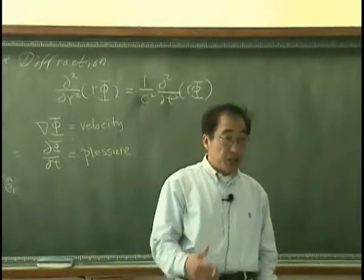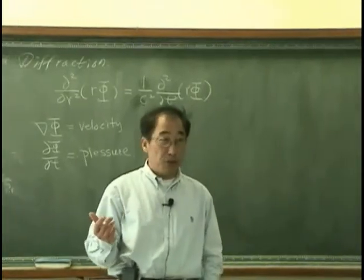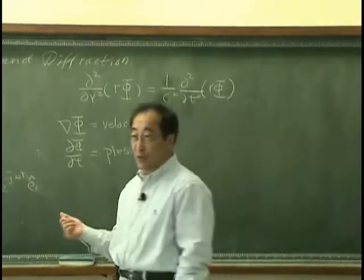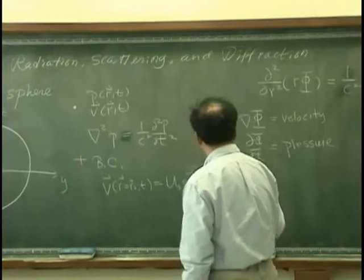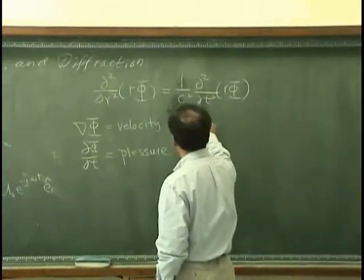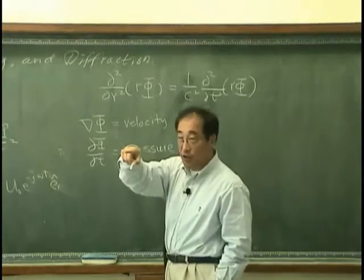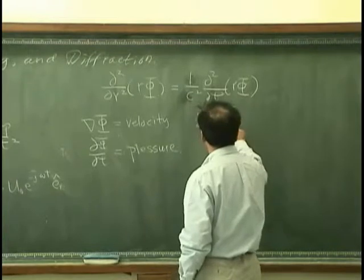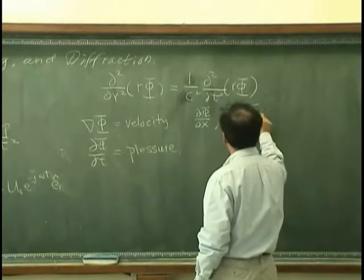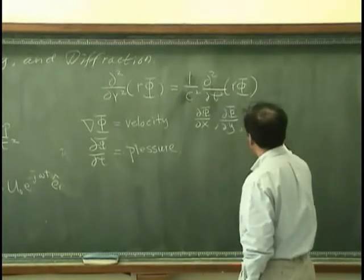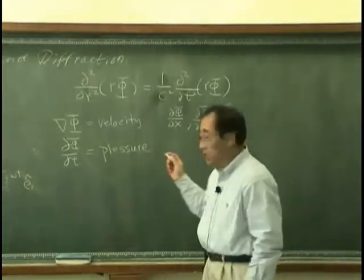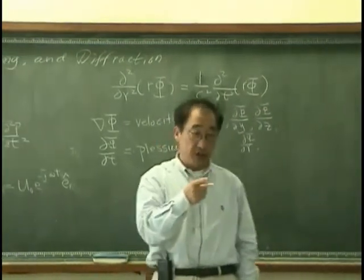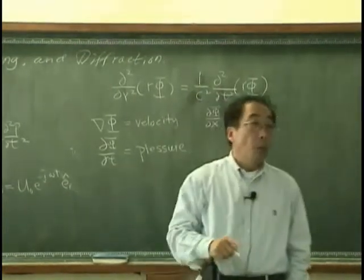Velocity potential is very convenient. As long as we know the velocity potential, if you just take a derivative with respect to space, then I will get the velocity. In other words, this means that if I take a derivative in x direction, I will get the velocity in x direction. If I take a derivative in z, then I will get the velocity in z direction. If I take a derivative in r direction, then I will get the velocity in r direction.